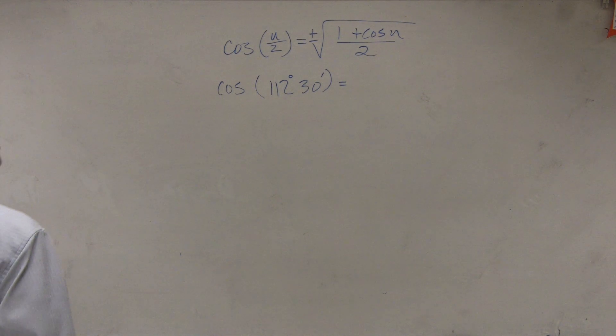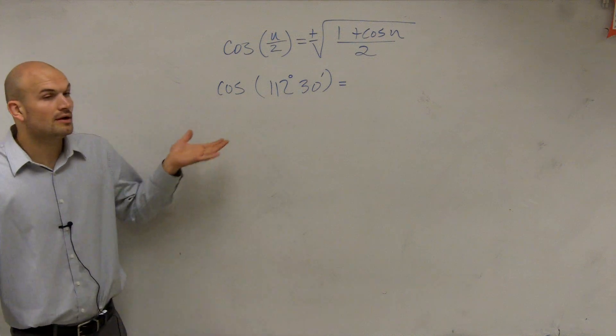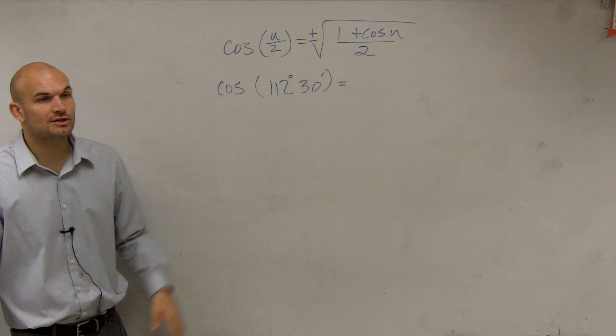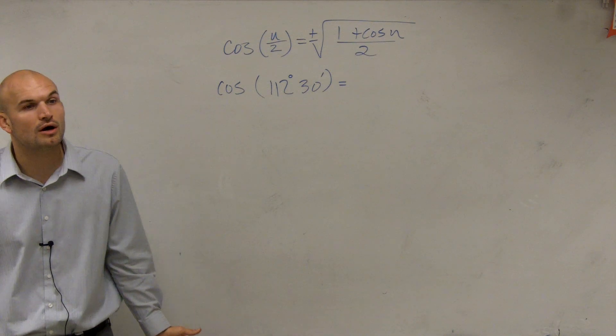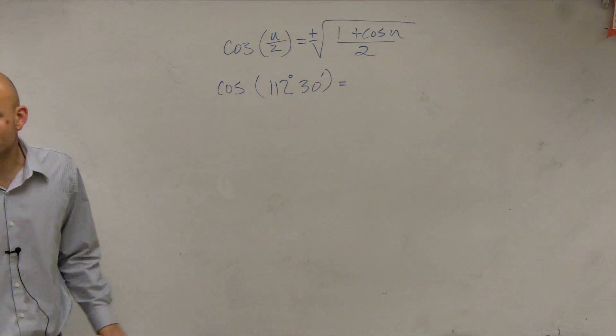So I have cosine of u divided by 2 equals plus or minus the square root of 1 plus cosine of u divided by 2. And therefore, I now want to be able to determine the cosine of 112 degrees and 30 minutes. So again, what we're going to look at is,